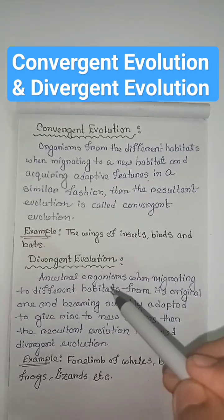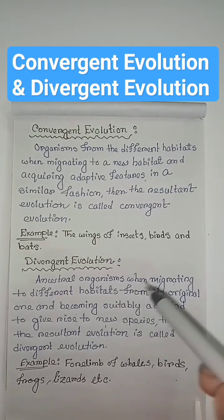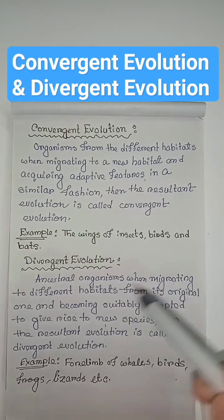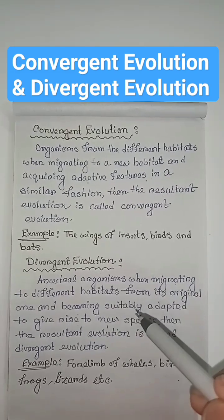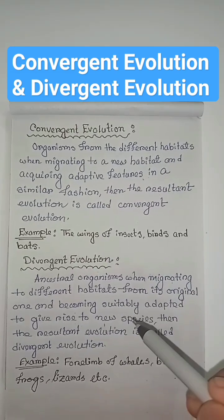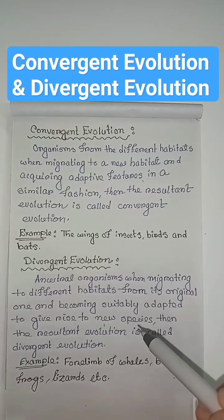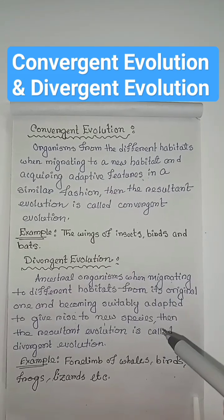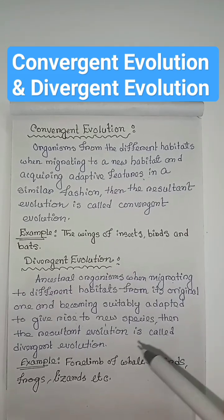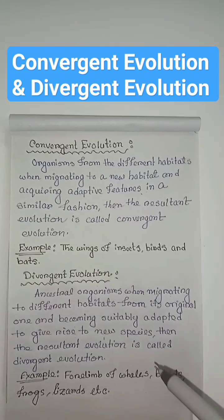Next, divergent evolution. Ancestral organisms, when migrating to different habitats from their original one and becoming suitably adapted to give rise to new species, then the resultant evolution is called divergent evolution.